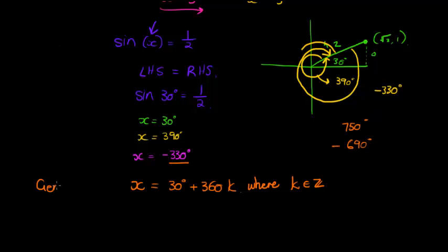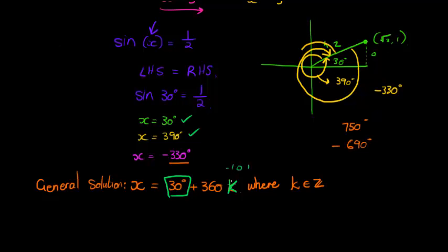This is called the general solution. There's our 30 degrees — our first quadrant solution. For every 360 degrees added, we get another solution, which is where the k comes in. If k equals 0, then 360 times 0 is 0, so we get 30 degrees. If k equals positive 1, we add one 360 to get 390. If k equals negative 1, we subtract 360 once and get negative 330. If k equals 2, we add 720, giving that solution. If k equals negative 2, we subtract 360 twice and get negative 690.